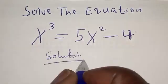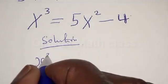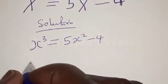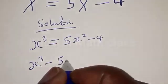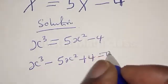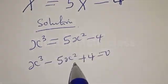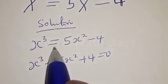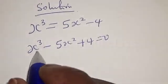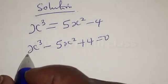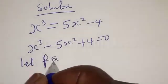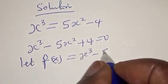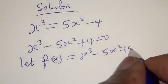Solution. We have s raised to power 3 equal to 5s squared minus 4. This can be expressed as s raised to power 3 minus 5s squared plus 4 equal to 0. We want to equate this to 0. The 5s squared crosses to the other side becoming minus 5s squared, and the minus 4 becomes plus 4. Therefore our equation becomes s³ minus 5s squared plus 4 is equal to 0.